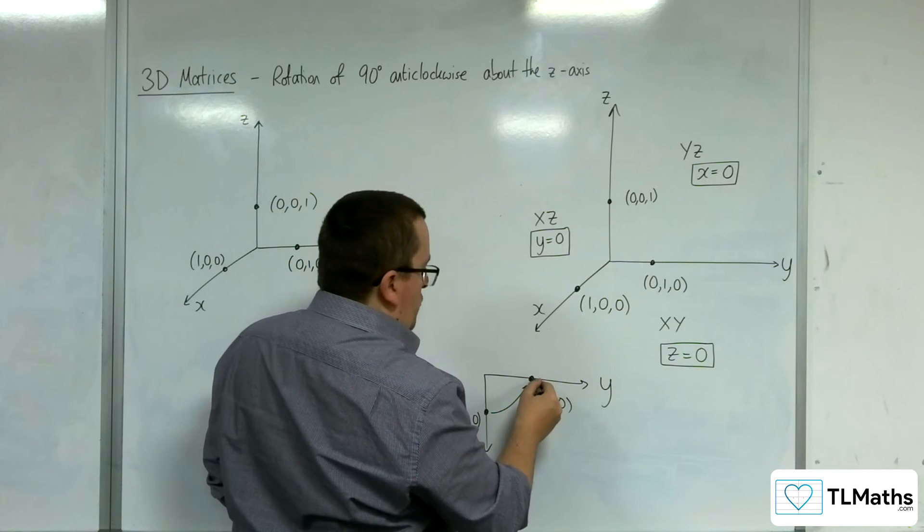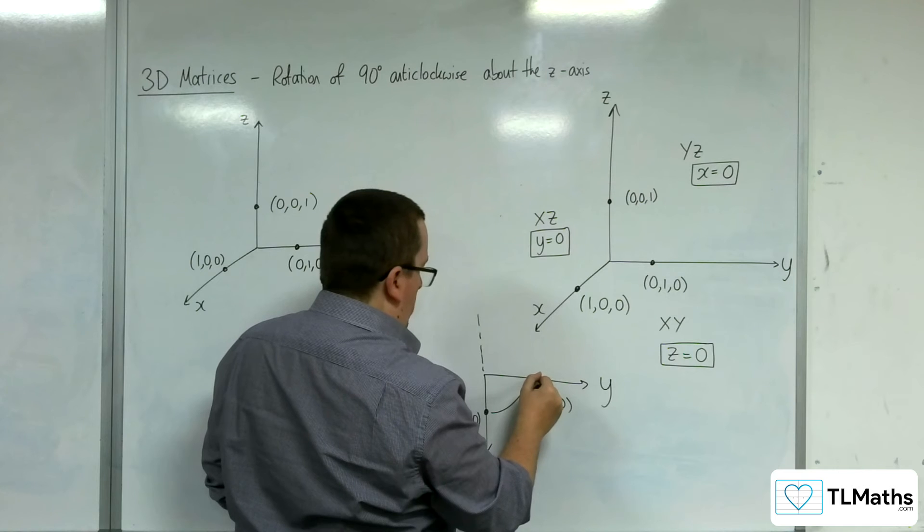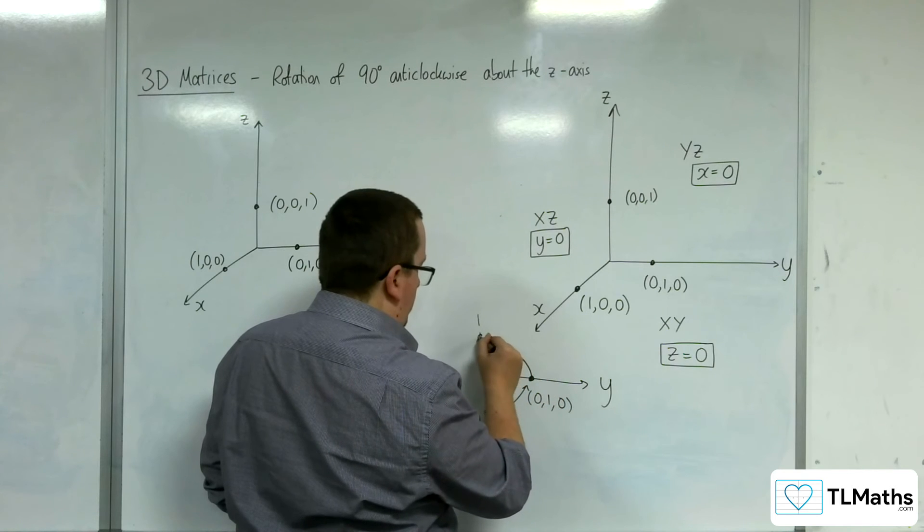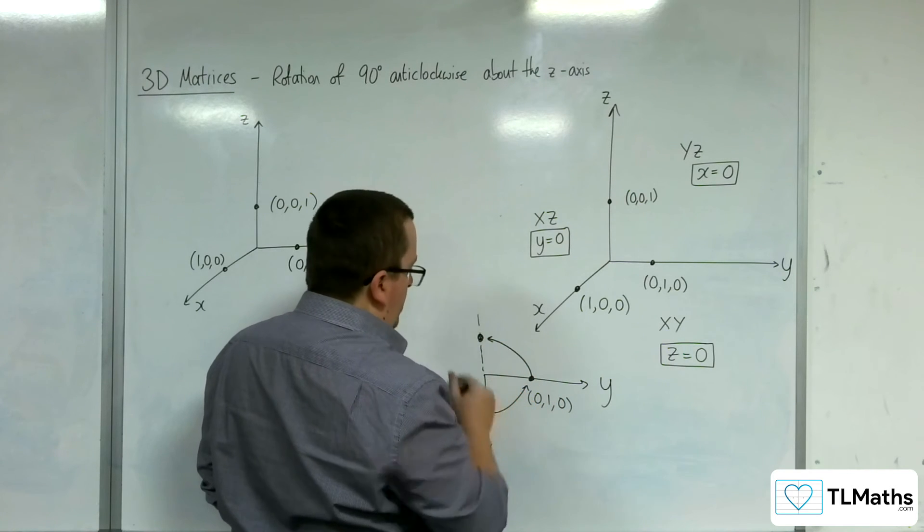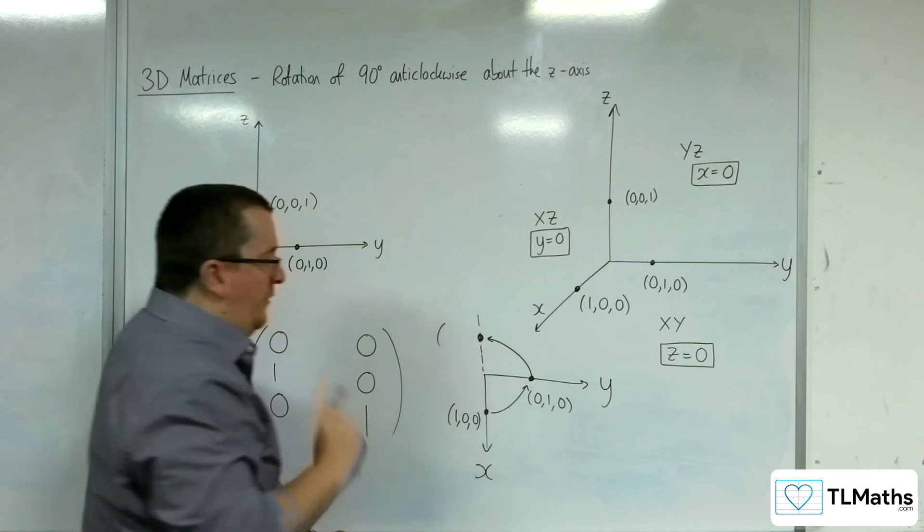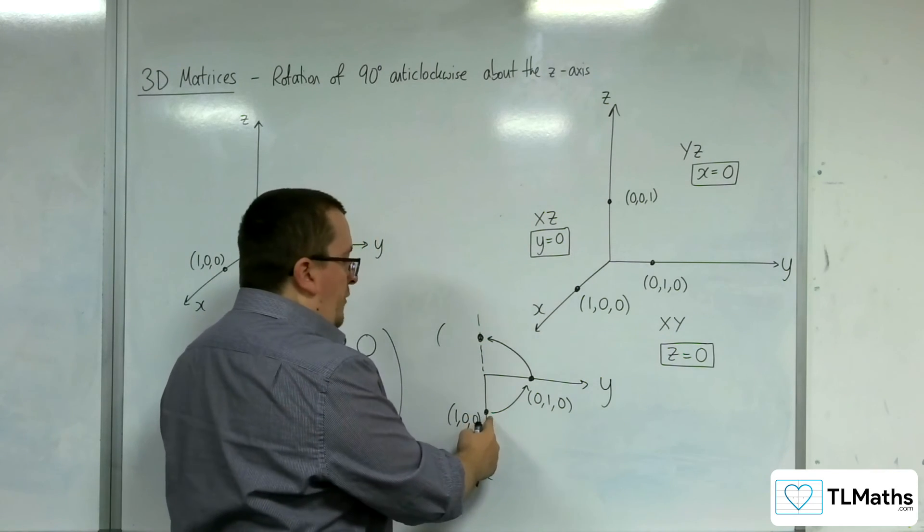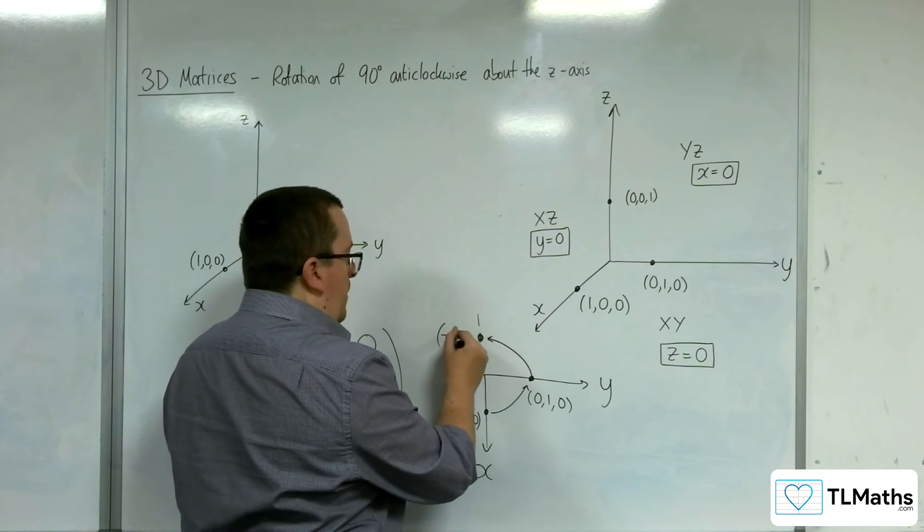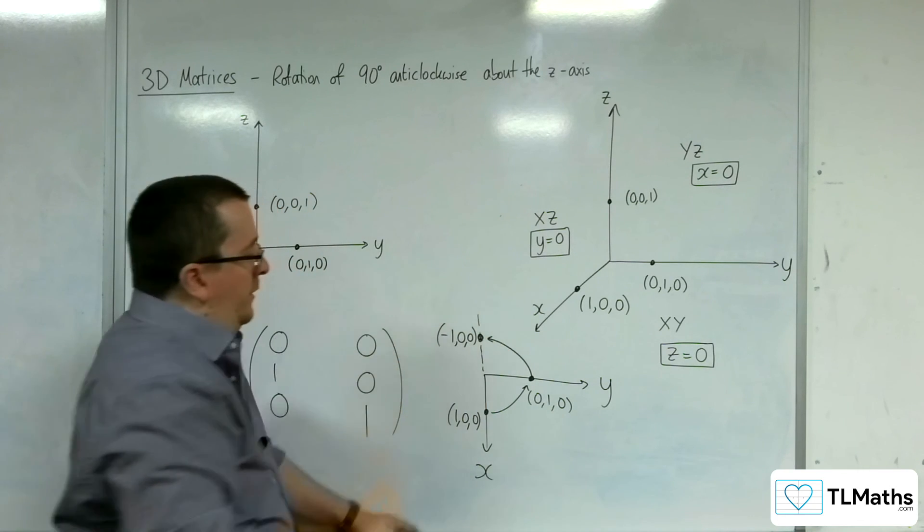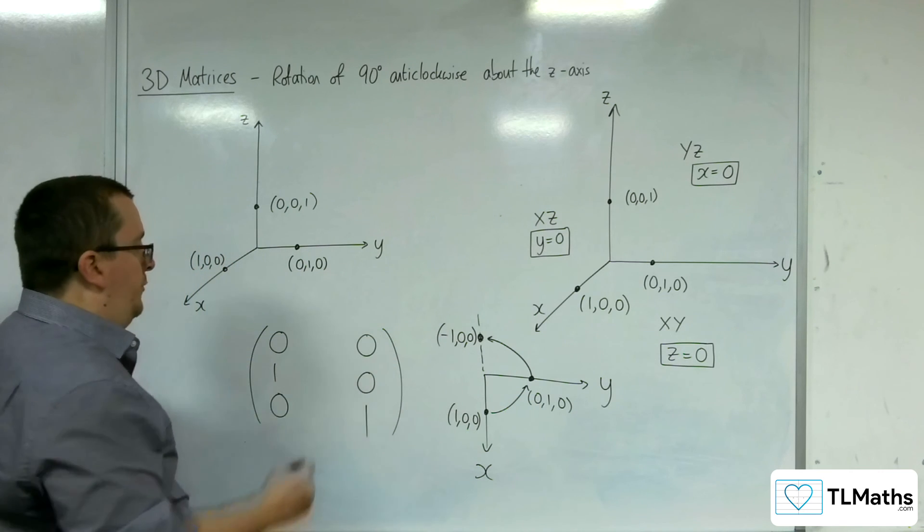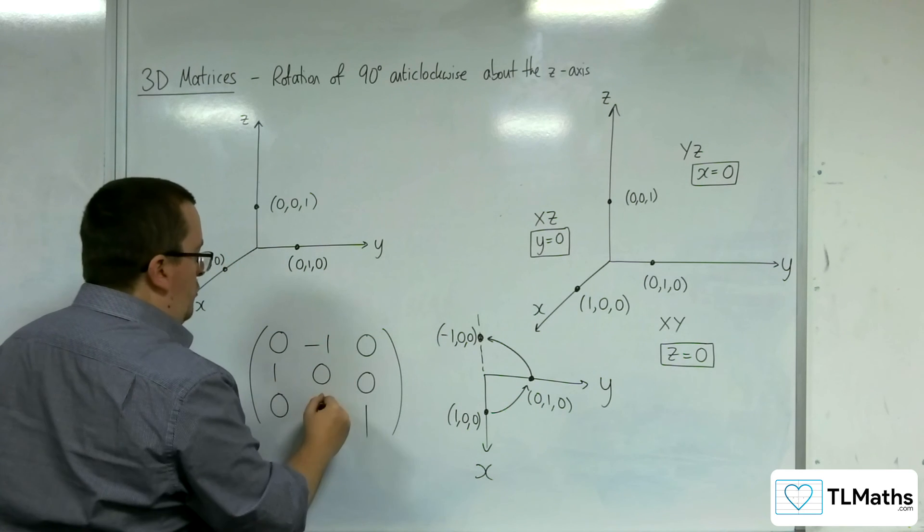And 010 would rotate round to here. This point here, because that's the x-axis, remember, there's 100. This would have to be minus 100. So 010 has gone to minus 100.